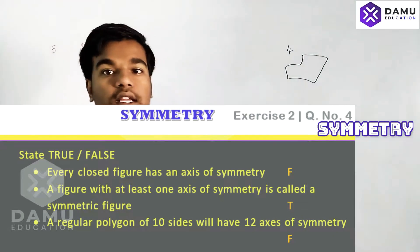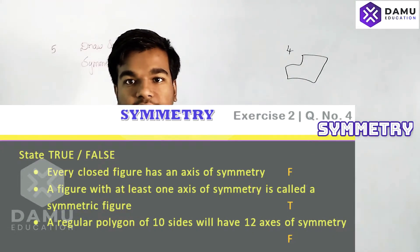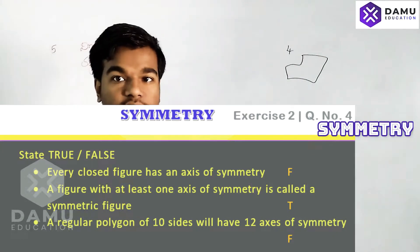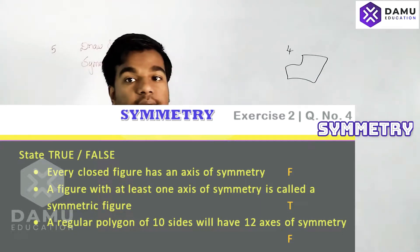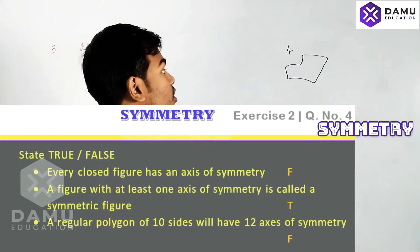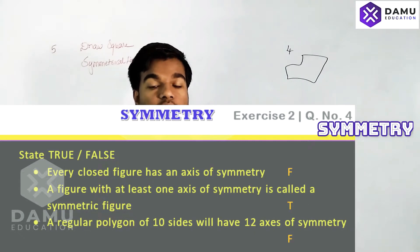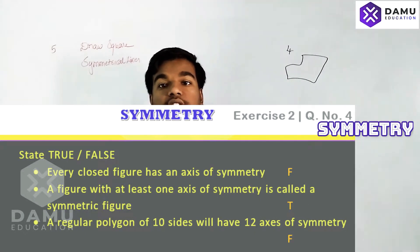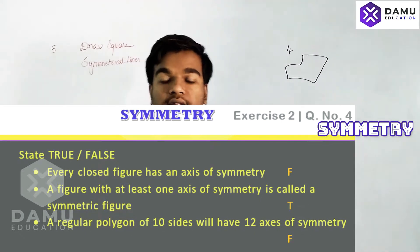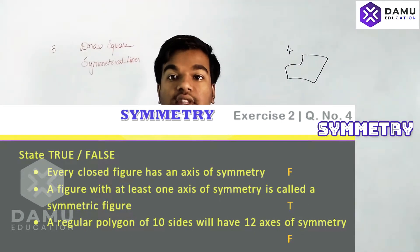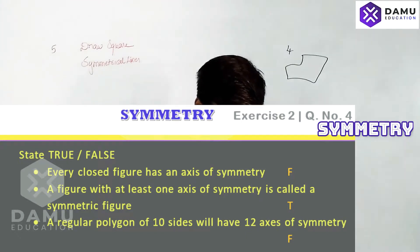Take this as a closed figure that will not have an axis of symmetry. If you fold any such figure and it will not coincide, that type of figure will not have an axis of symmetry. So that statement is false.